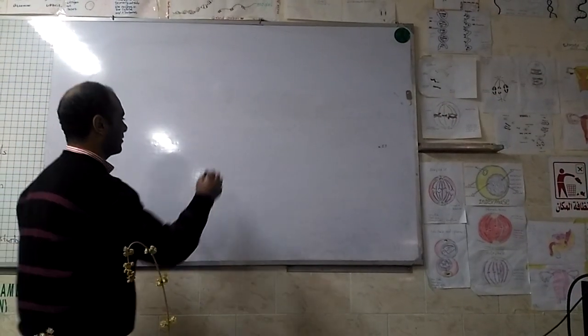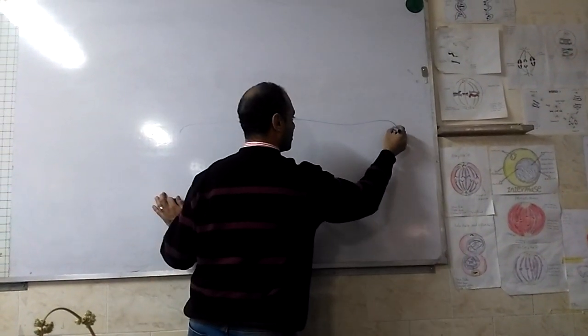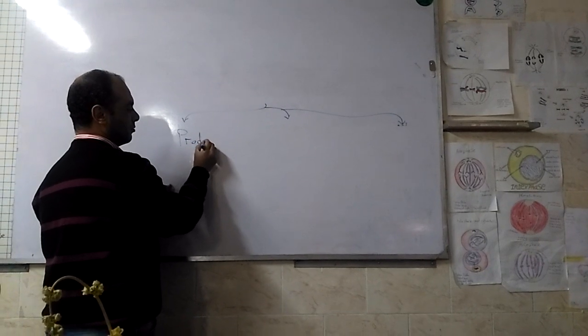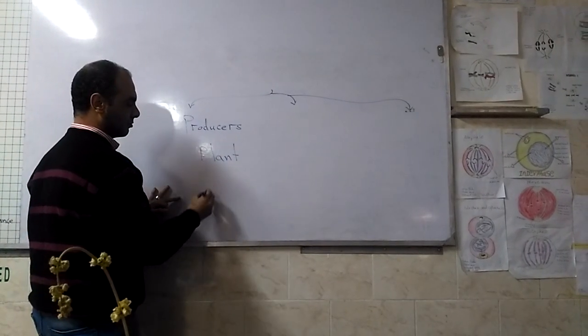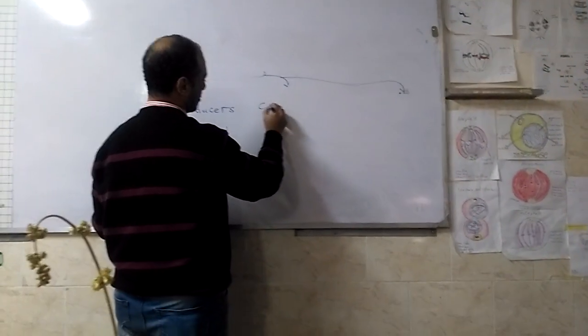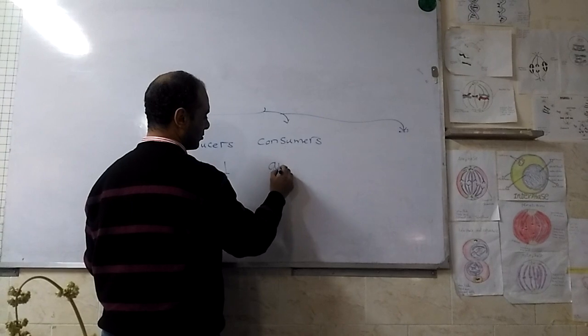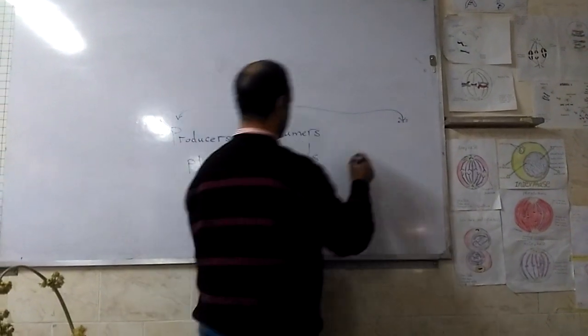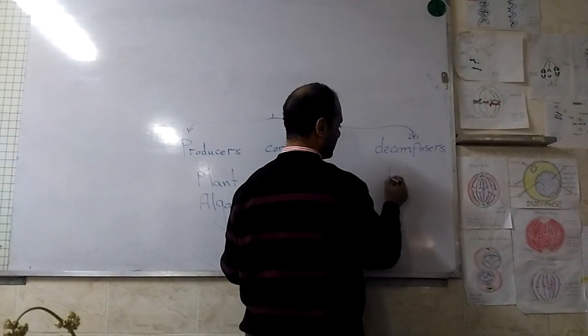First, energy in living organisms is divided into three levels: producers such as plants, consumers such as animals, and decomposers such as bacteria.